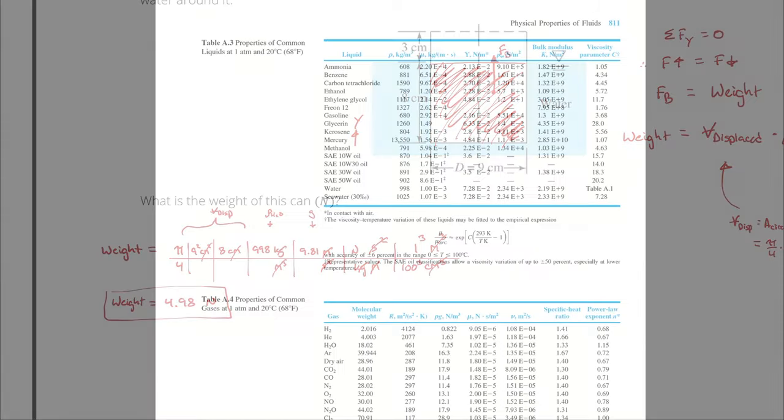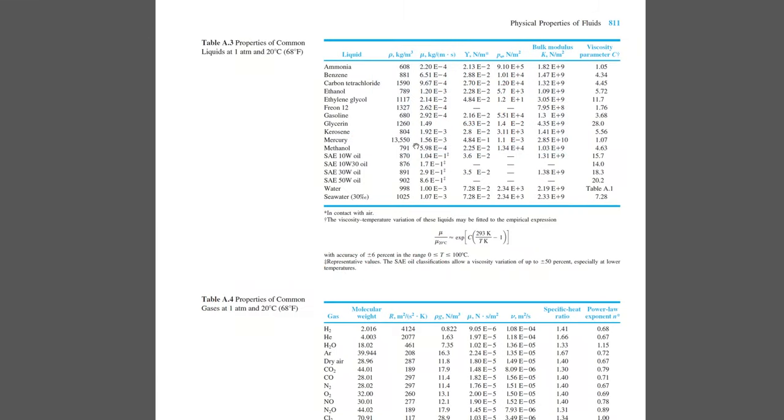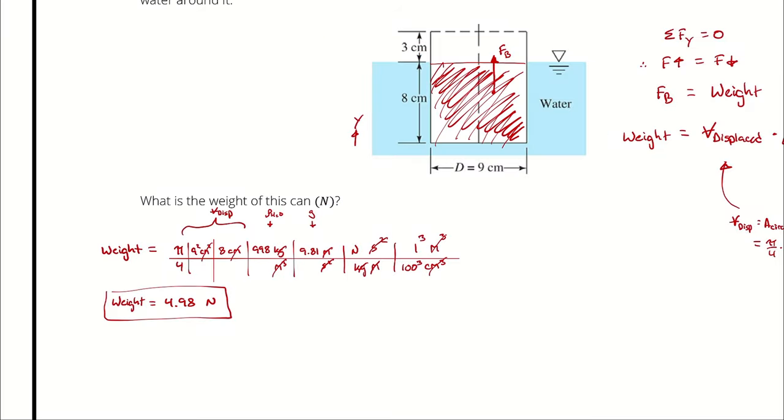And if it were something crazy dense, like say mercury, then that can would float so high that it might look like it's just resting on the surface of the water. That's why it's easier to swim in places like the Dead Sea. The high salt content makes the density of that water higher, which means that it takes less volume to support your weight. Therefore, you are more buoyant in the Dead Sea.